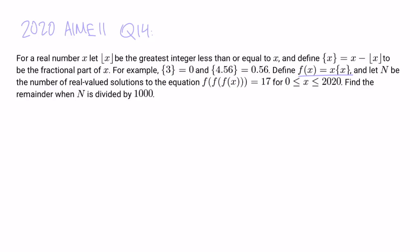Hey everyone, today we're going to be going over the 2020 AMC 12 question 14. For real number x, let the floor of x be the greatest integer less than or equal to x, and define the fractional part of x equal to x minus the floor of x. Define f of x to be equal to x times the fractional part of x, and let n be the number of real-valued solutions to f(f(f(x))) = 17, for 0 ≤ x ≤ 2020. Find the remainder when n is divided by 1000.